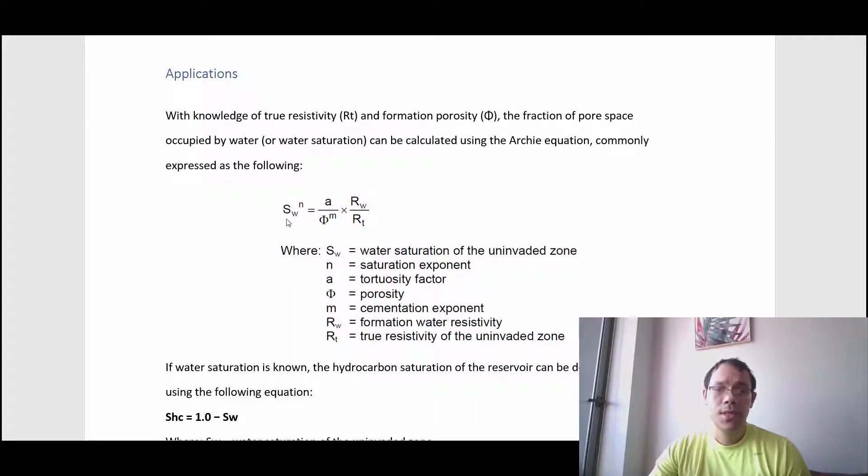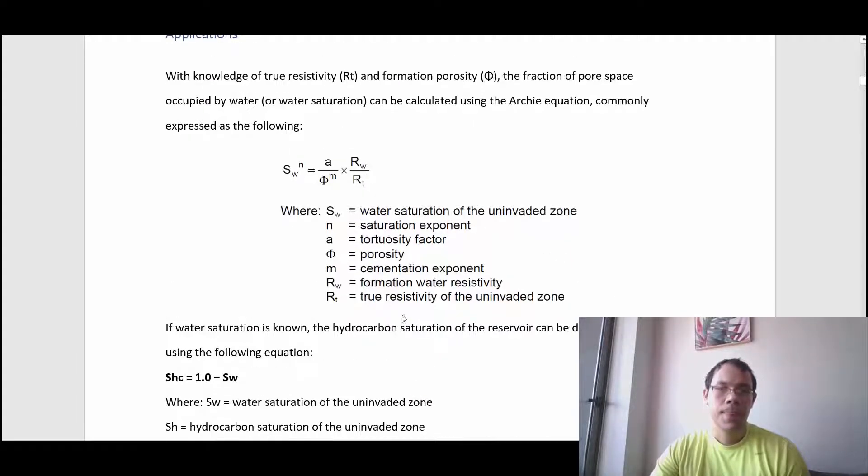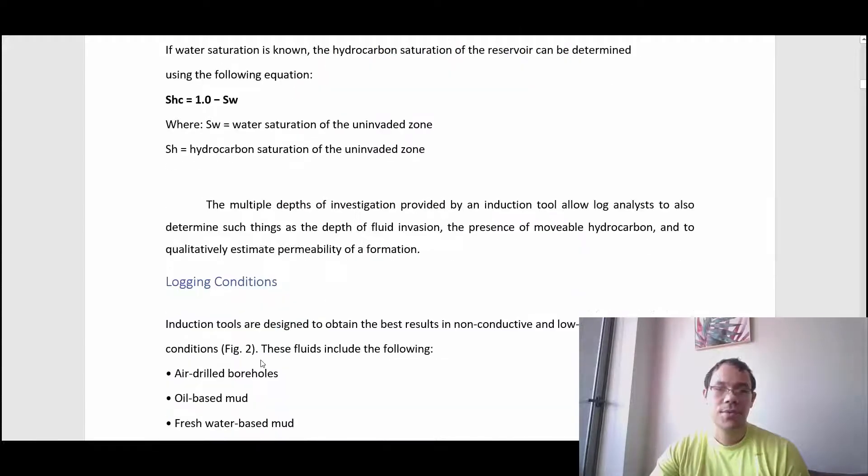An important comment is that to get water saturation, you need to calculate the true resistivity of the uninvaded zone, and you will assume some other factors like tortuosity factors and saturation exponents. What we're interested in is knowing hydrocarbon saturation. The formula is you just subtract one minus water saturation, and whatever is not water is assumed to be hydrocarbons.